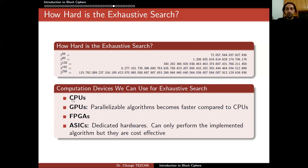How can we perform exhaustive search attacks? You can use CPUs — desktops or laptops are the easiest computational devices to obtain. GPUs, mainly used for gaming, are today very good for scientific computing; parallelizable algorithms can be 10 to 100 times faster on GPUs compared to CPUs, depending on the algorithm. You can also use FPGAs — Field Programmable Gate Arrays — for exhaustive search. Or you can use ASICs, which are dedicated hardware that can only perform the implemented algorithm but are cost-effective compared to FPGAs or other devices.